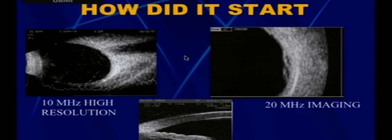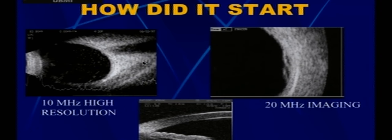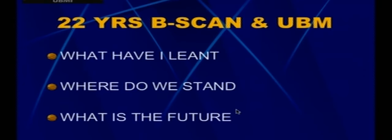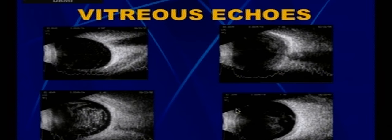Good afternoon everyone. After the extensive discussion of CT scan and MRI, I'll spend a few minutes on ultrasonography — this is a brief review, not a comprehensive ultrasound talk. We started with a 10 MHz probe, then moved to a 20 MHz probe for most conditions, and now use 50 MHz for anterior segment lesions. I'll discuss what I've learned over my surgical career and what the future holds.